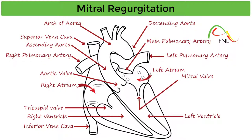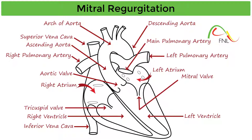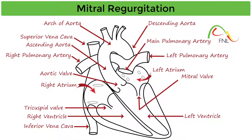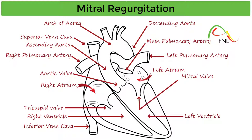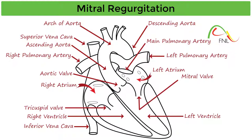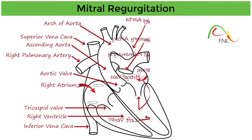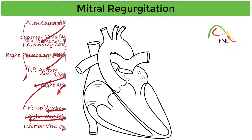As the left ventricle contracts, the mitral valve closes and the aortic valve opens. The oxygenated blood from the left ventricle flows through the aortic valve into the aorta to be supplied to the rest of the body.